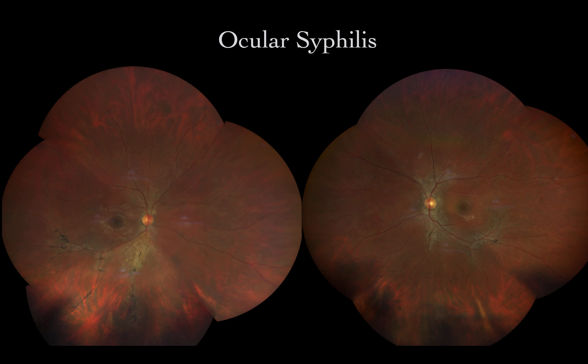Secondary syphilis is more common to diagnose. Patients may have a rash on the hand among other findings, and in the eye they may present with any type of extraocular or intraocular inflammation. It is very common to see bilateral or unilateral uveitis or vasculitis with secondary syphilis. This picture shows a patient with a documented positive syphilis test who had decreasing vision and developed a vasculitis.